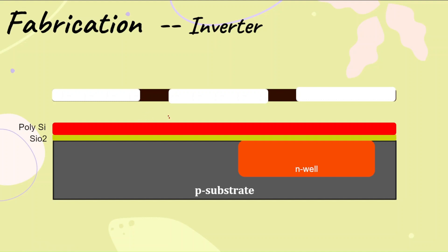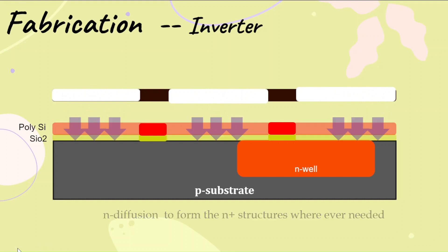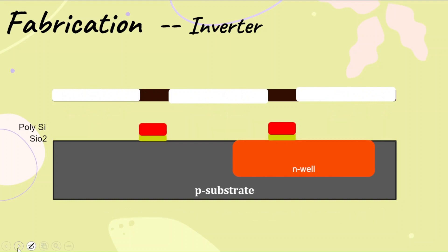Now upon this, the second mask is placed to form the gate region. Here I need a gate to be formed, and here I need a gate to be formed. Only this region is protected, and the rest of the regions are allowed to be exposed. The light is passed; it melts the layer, creating gates for PMOS and NMOS.